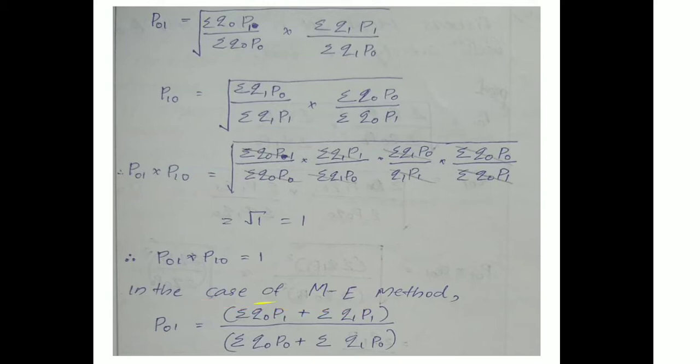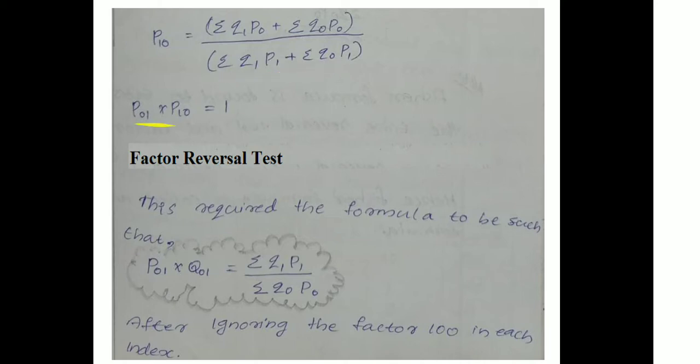In the case of the Marshall-Edgeworth method, P01 equals (summation Q0·P1 + summation Q1·P1) divided by (summation Q0·P0 + summation Q1·P0), and P10 equals (summation Q1·P0 + summation Q0·P0) divided by (summation Q1·P1 + summation Q0·P1). The common factors cancel giving 1 by 1, so P10 into P01 equals 1. Therefore Marshall-Edgeworth test is satisfied.